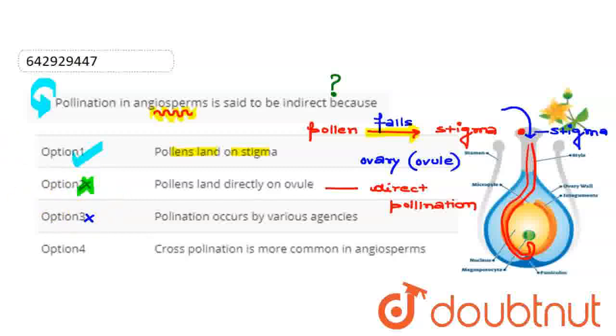Third option is pollination by various agencies. This refers to cross-pollination, which plays a major role in pollination.